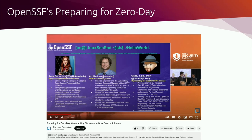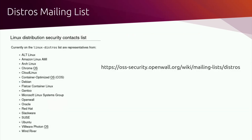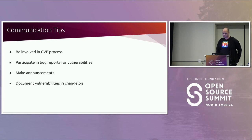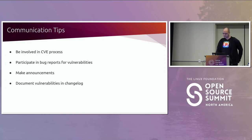I highly recommend watching OpenSSF's 'Preparing for Zero Day' from last year's Linux Security Summit. If your project needs to perform coordinated vulnerability disclosure and you want to notify Linux distributions, look into the distros mailing list. Other communication tips: be involved in the CVE process — the CVE description is the first place most people learn about a vulnerability, so as the developer you likely understand it well. Suggest the description for the CVE to head off miscommunication. Depending on severity, also announce disclosure on a mailing list or your website.